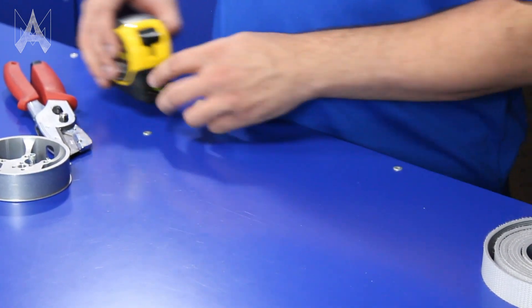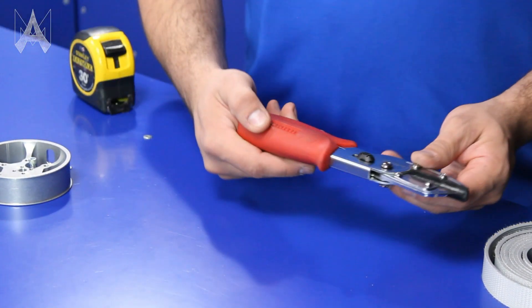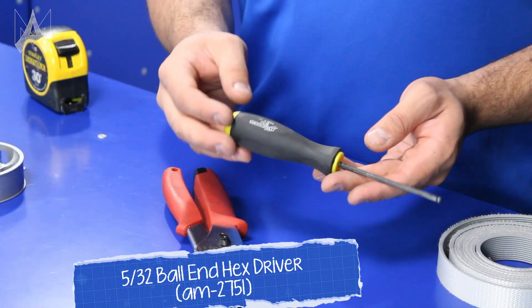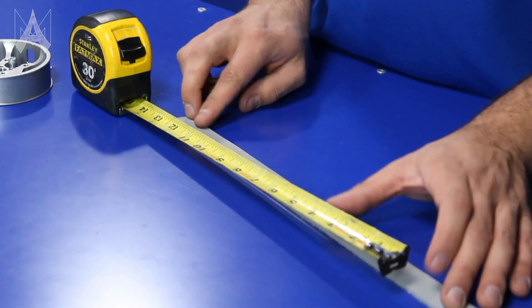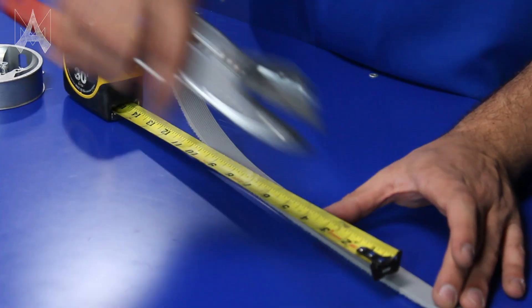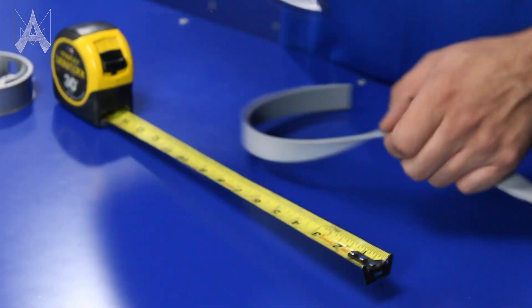Tools you'll need for this are a tape measure, something to cut your tread, and a 5/32 Allen driver. Tread comes in 10-foot rolls but you'll need exactly 13 inches for each wheel.